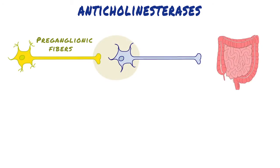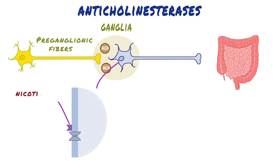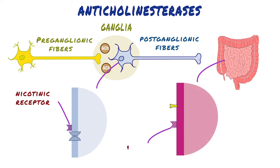Pre-ganglionic neurons of the parasympathetic division have their cell bodies in either the brain stem or the sacral spinal cord. Pre-ganglionic axons project to a series of ganglia located near or in the effector organs. All pre-ganglionic neurons are cholinergic and release acetylcholine, which interacts at nicotinic receptors on the cell bodies of postganglionic neurons. Most postganglionic neurons of the parasympathetic division are also cholinergic. Receptors for acetylcholine in the effector organs are muscarinic receptors rather than nicotinic receptors.